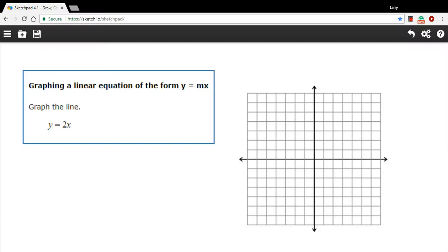In this problem, we're being asked to graph a linear equation in this particular form where you have y on one side of the equal sign, and then some number multiplied by x on the other side.